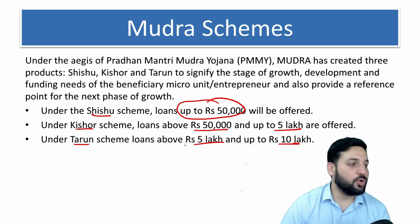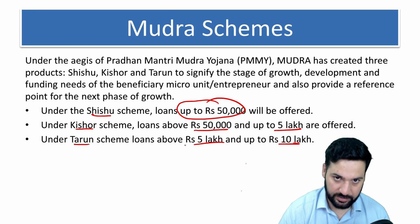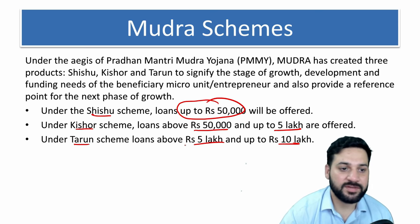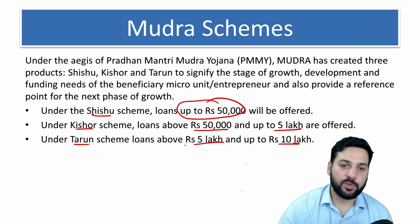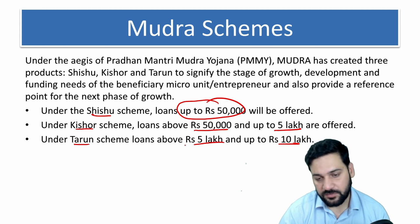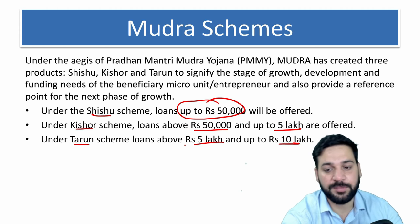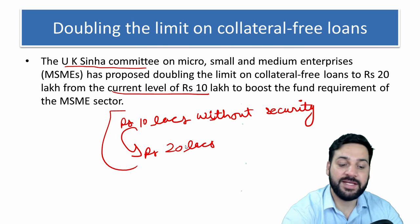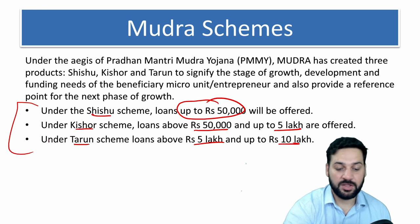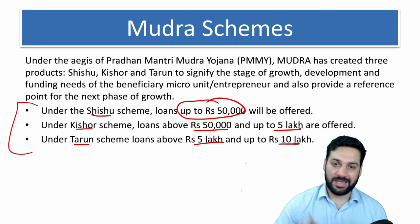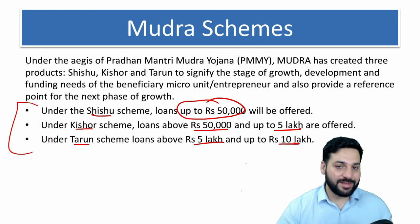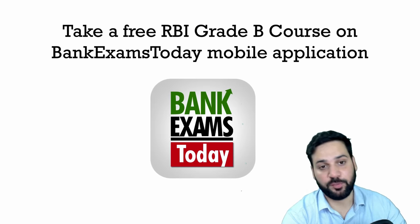There is no need to give collateral or security — that is the benefit of the Mudra scheme, which provides funding to the MSME sector and entrepreneurs. The limit of 10 lakh is now recommended to be 20 lakh, meaning the government of India can make changes to the Mudra scheme to reflect this increase.